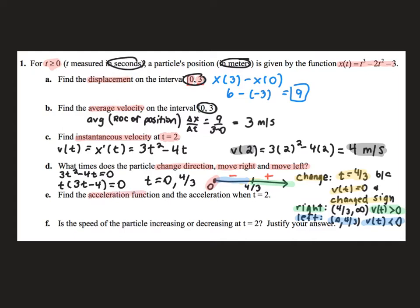Next I'm asked about acceleration, which is one more derivative out. I start with the velocity function and take a derivative. The derivative of my velocity function by the power rule is 6t minus 4. When I plug 2 in to find the acceleration at 2, I get 8 meters per second squared. It's important that you show acceleration as a function of t and then what that value is when you plug 2 in.